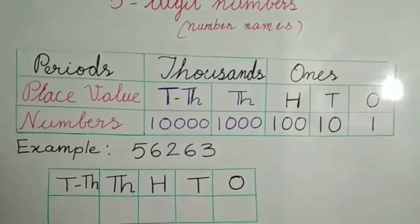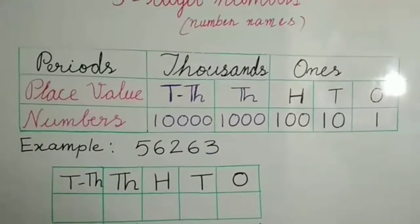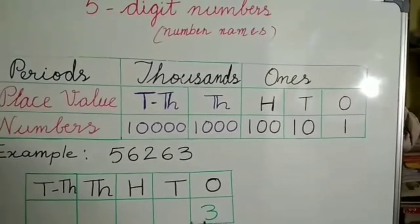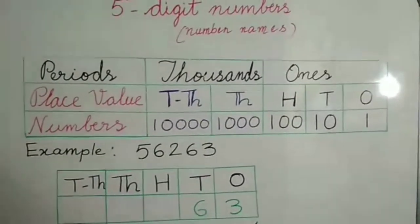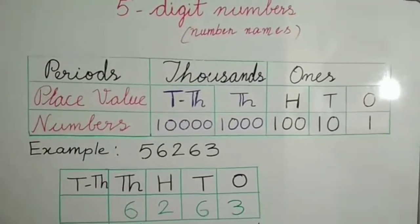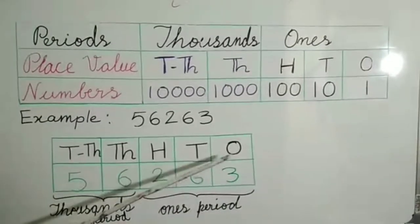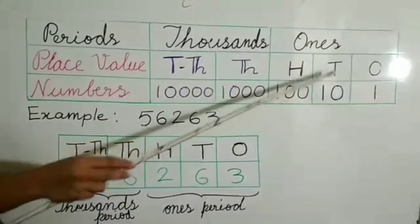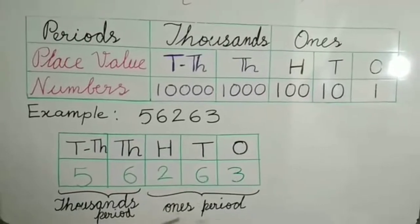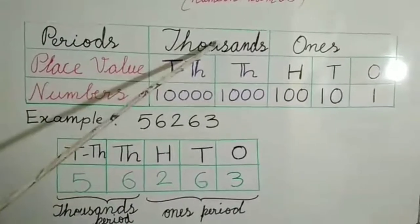Let us take one example. Here is a five-digit number. Now let us write the digits in their places: 3 at ones, 6 at tens, 2 at hundreds, 6 at thousands, 5 at ten thousands. Ones, tens, and hundreds are the ones period.